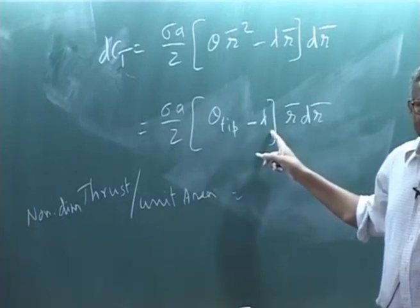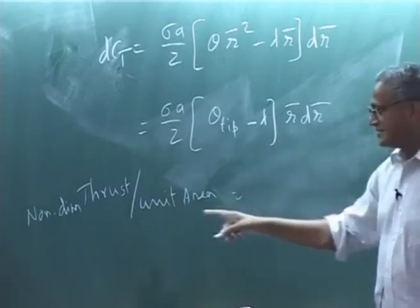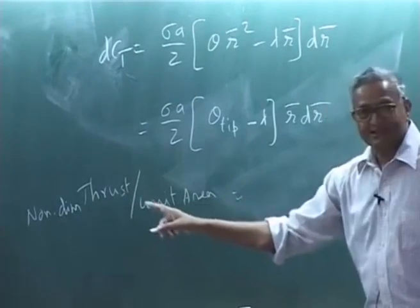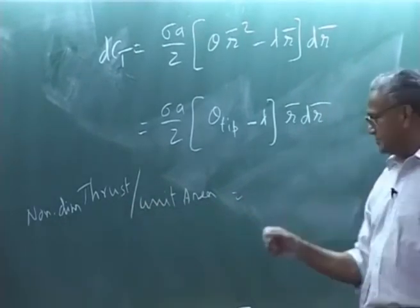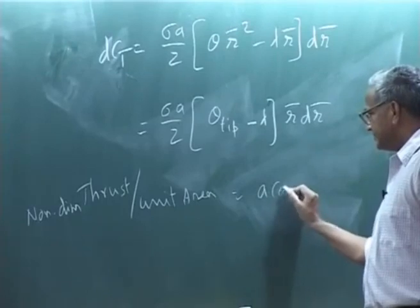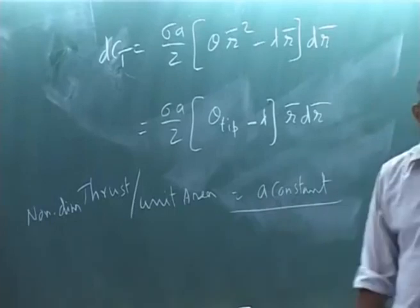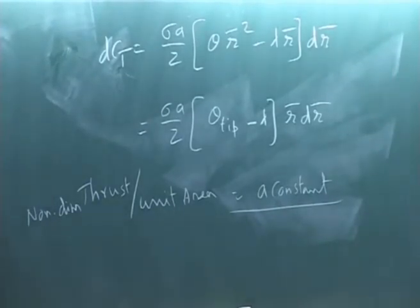This is theta tip and my lambda is uniform inflow. That means I get this for uniform inflow non-dimensional thrust per unit area, or in other words, this means my loading, I distribute the load uniformly. Please understand, because it is not that some area I load more and some other area I load less.